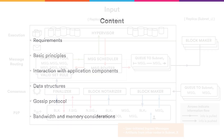The peer-to-peer layer is responsible for sending out artifacts created by the layers above — for example, consensus — and for receiving, validating, processing and distributing artifacts arriving from other nodes in the same subnet, as well as from users. Peer-to-peer also handles artifacts for state synchronization, certification, and so on.